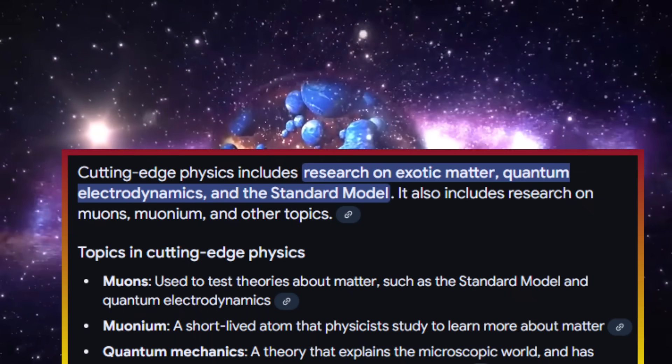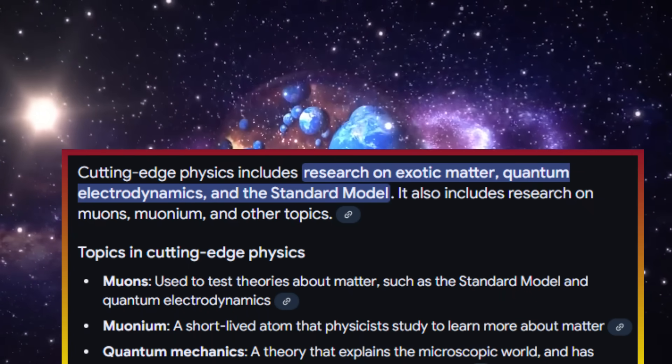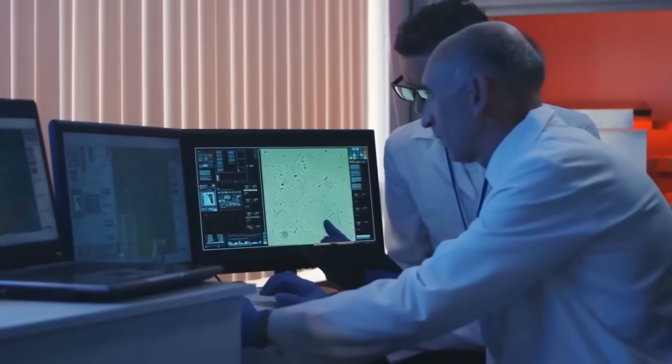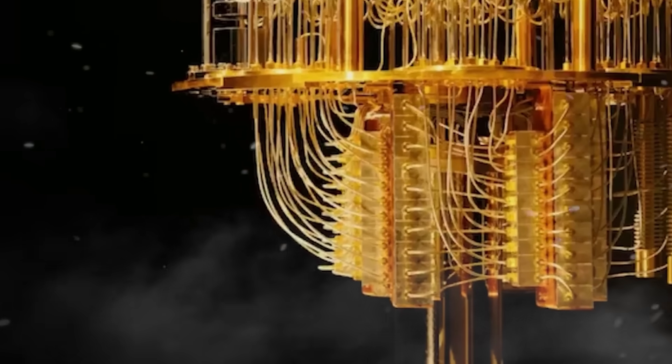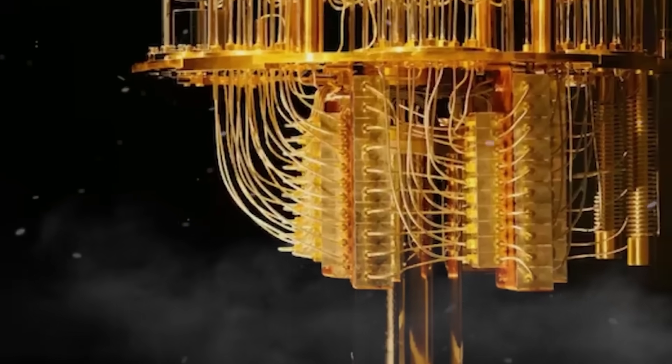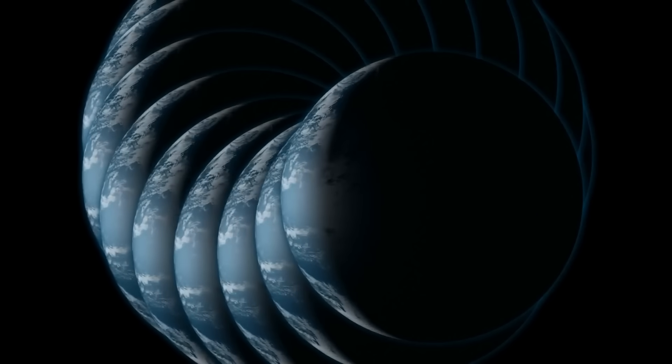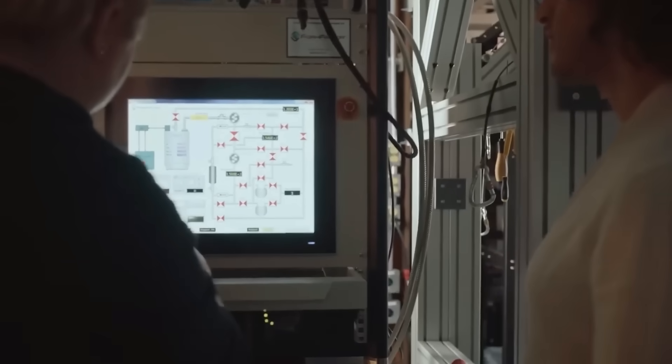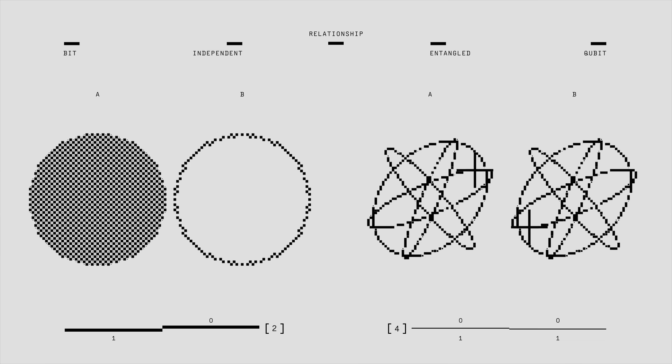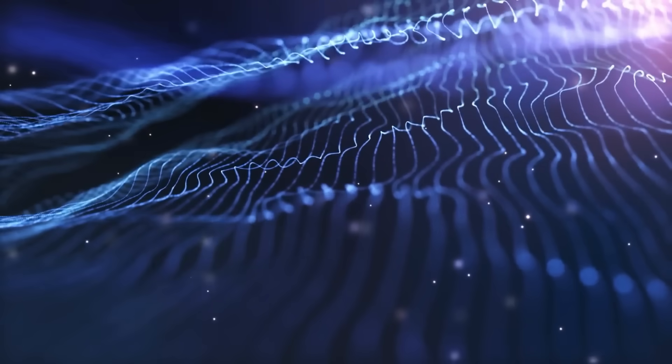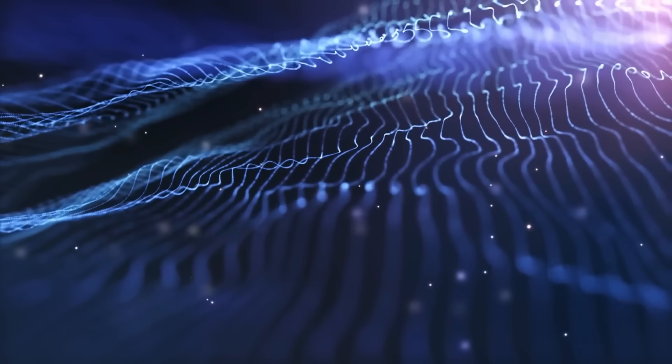One of the most alarming possibilities is that quantum computers could accidentally cause reality shifts that we wouldn't even notice. If our perception of reality is based on stable quantum probabilities, what happens if we start manipulating those probabilities at an extreme level? Could it result in history altering without us realizing it? Could we see an increase in unexplained glitches, sudden memory inconsistencies or even irreversible changes to the physical world? And this brings us to the most shocking part.